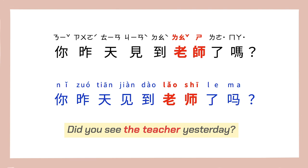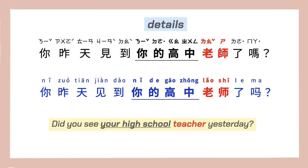If both the speaker and the listener know which teacher you are referring to, then you can simply say 老师 without adding anything else. But if the listener doesn't know which teacher you are talking about, then you will have to add more details to the noun. For example, 你昨天见到你的高中老师了吗? — Did you see your high school teacher yesterday?